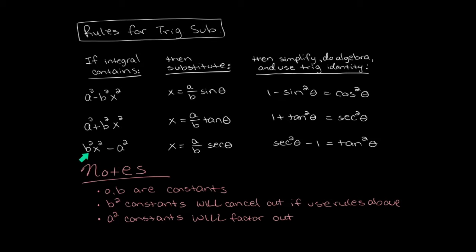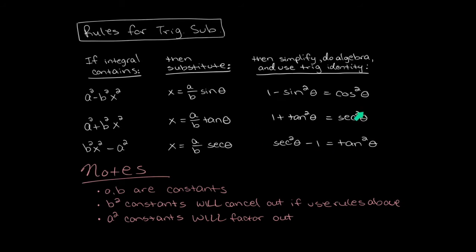Finally, we have our last rule: if you have a constant times x squared minus another constant — notice the x is in front compared to the first rule — then substitute x equal to a over b times secant theta. The trig identity you'll use is secant squared minus 1 equals tangent squared. Notice this is the same identity as before, just with the 1 moved to the other side.